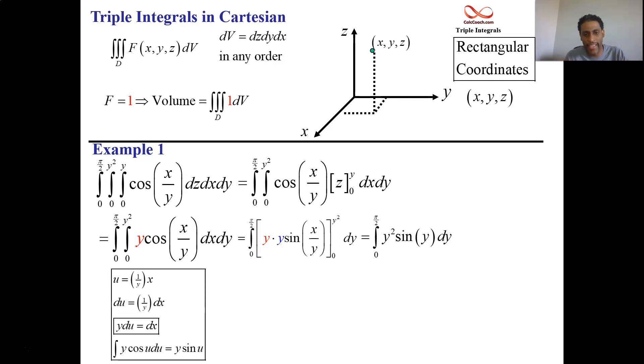And so when you have a product like this, one technique that often works is integration by parts. And there are occasionally times when you can use a shortcut to integration by parts. And so we'll use this shortcut when you have a polynomial times an easily integrable function multiple times, that is.